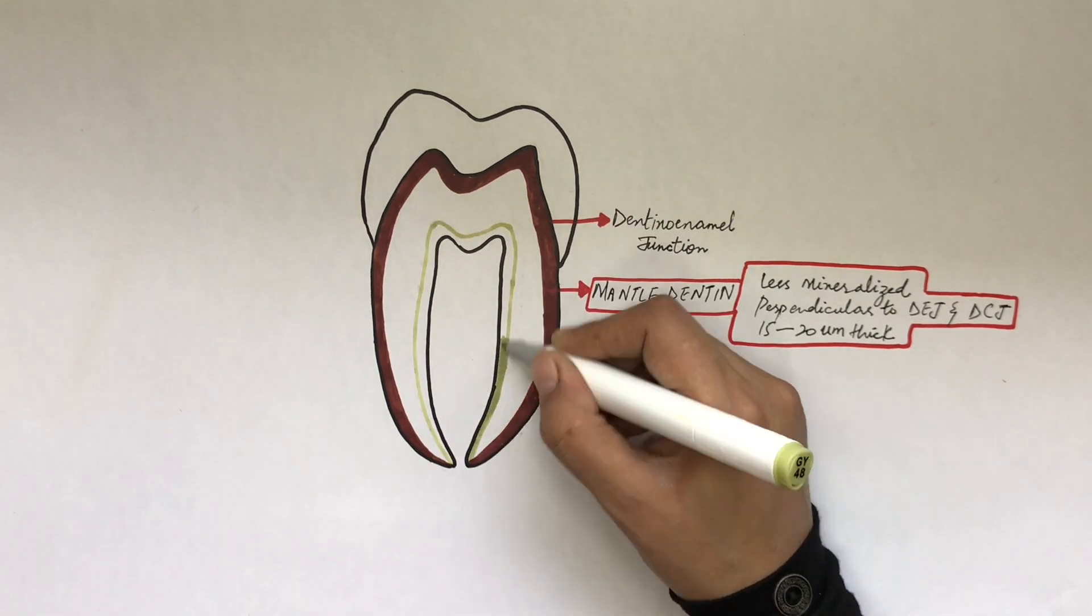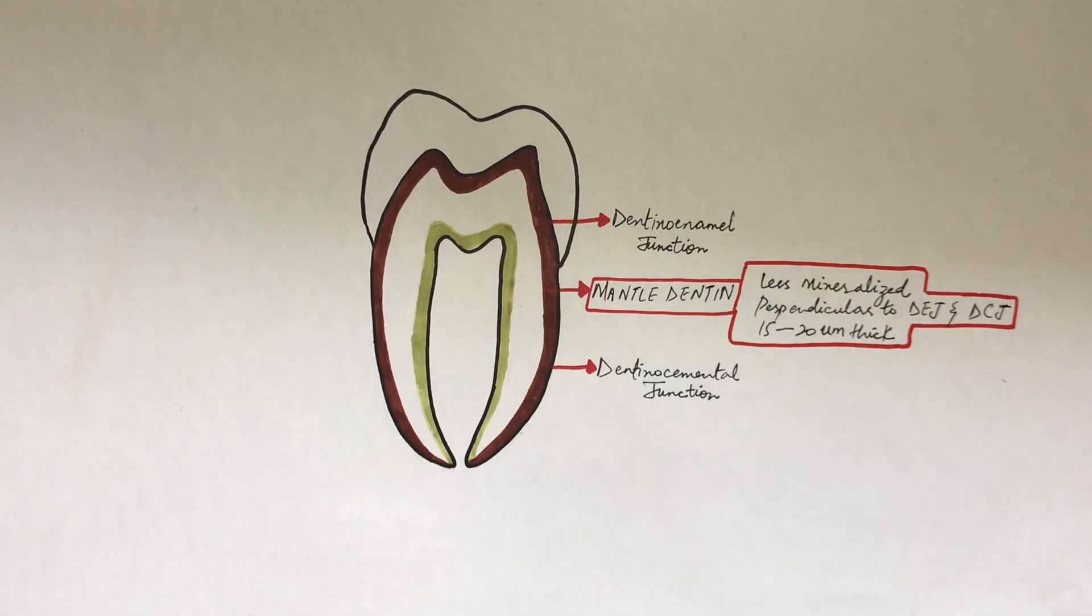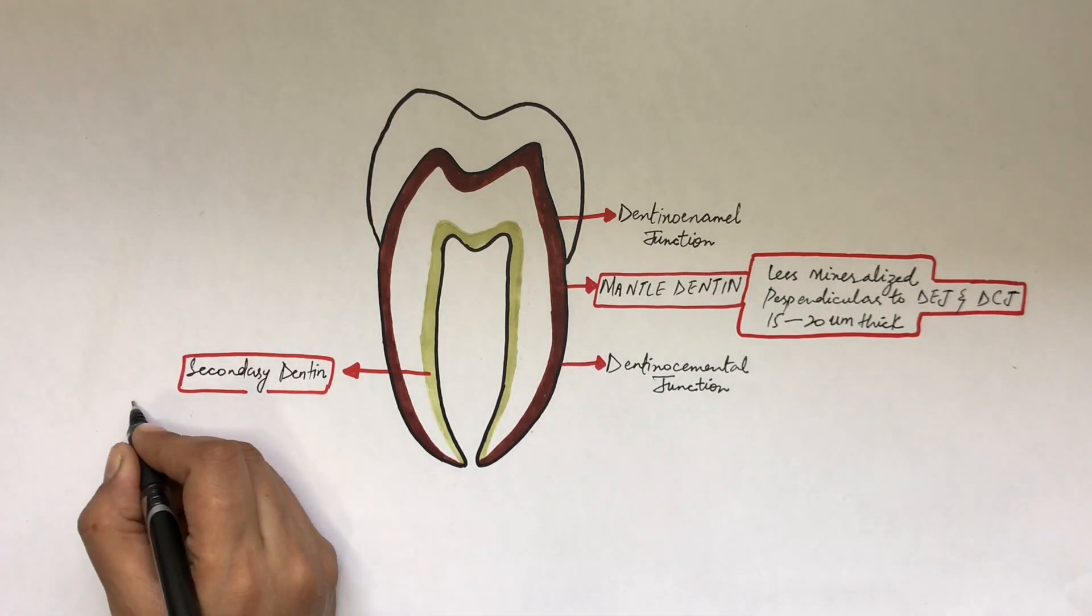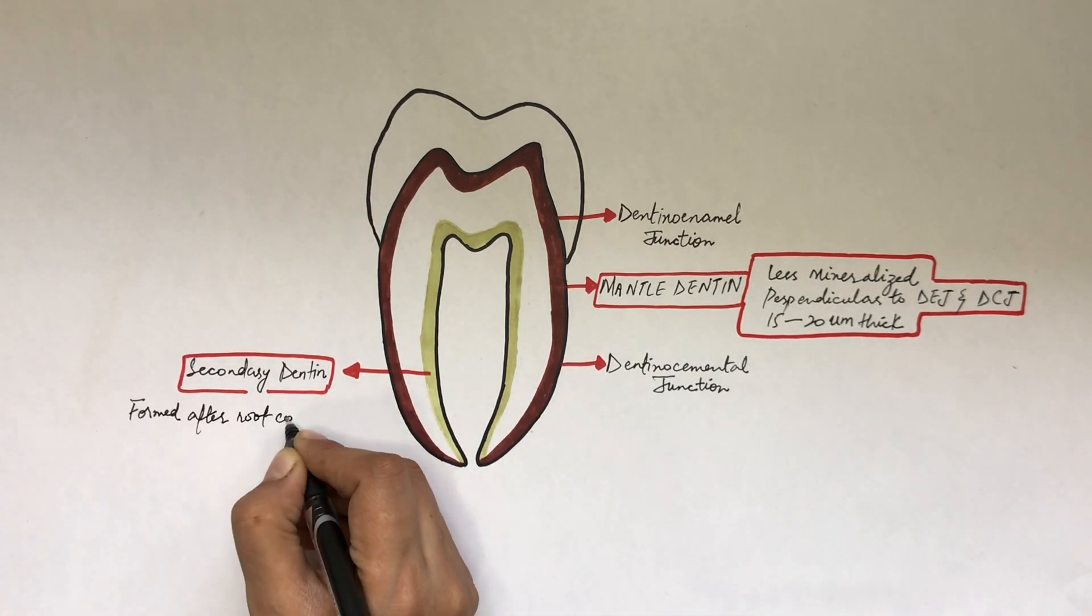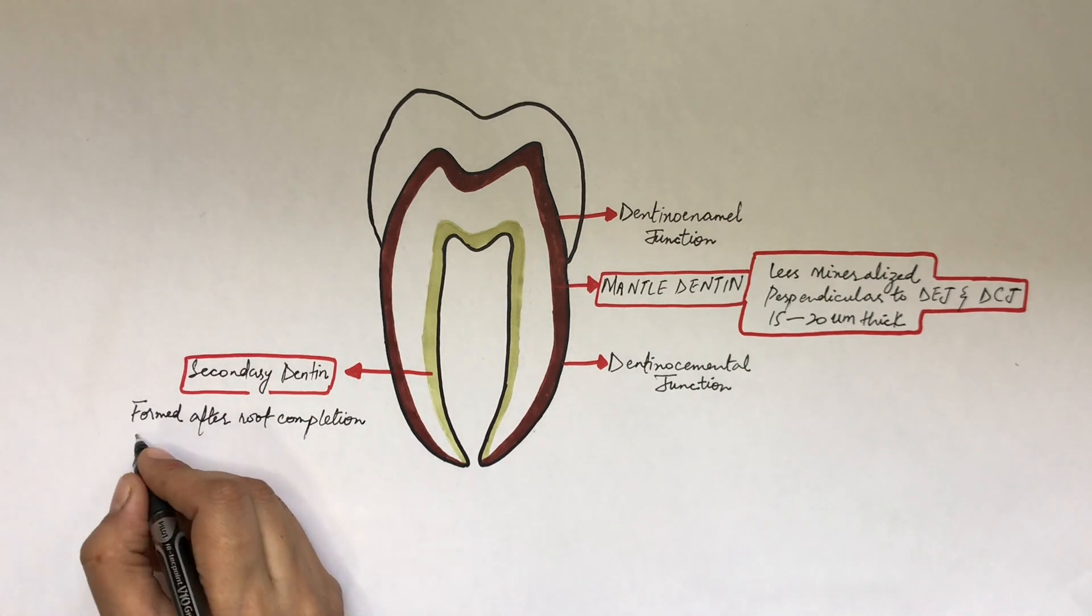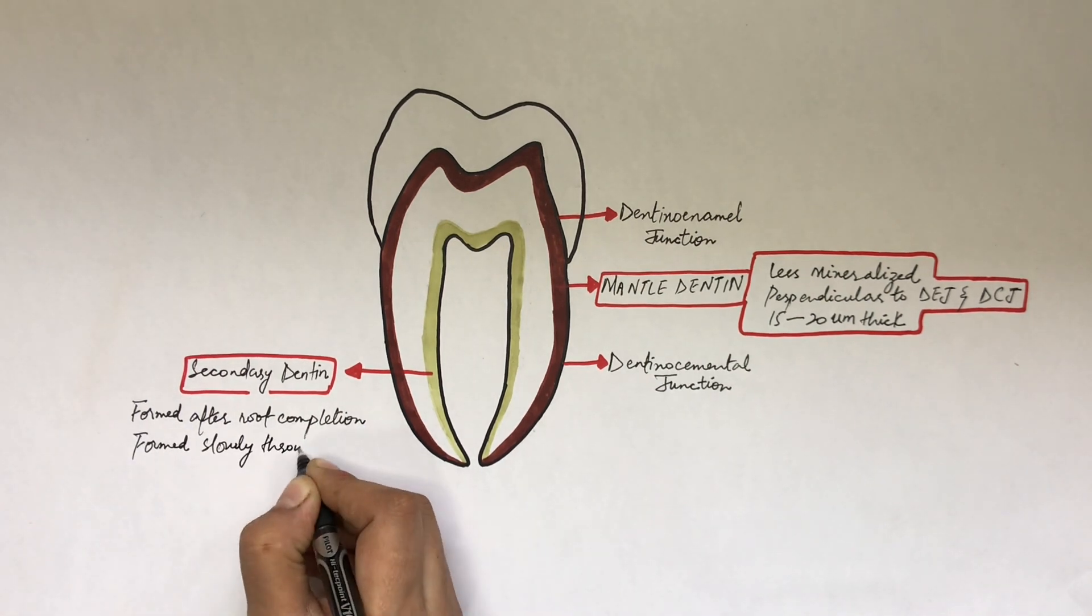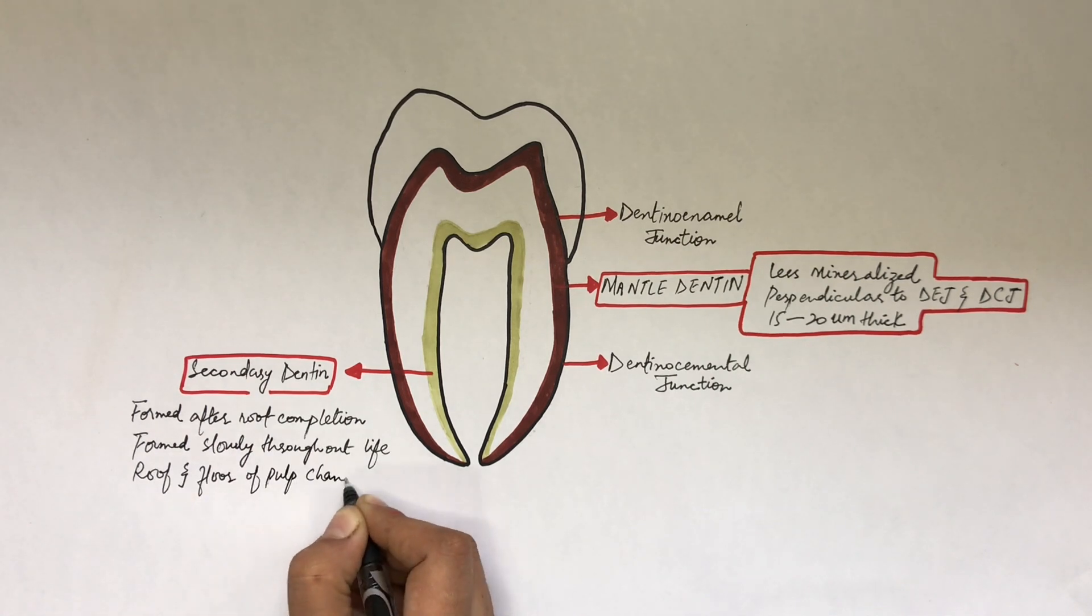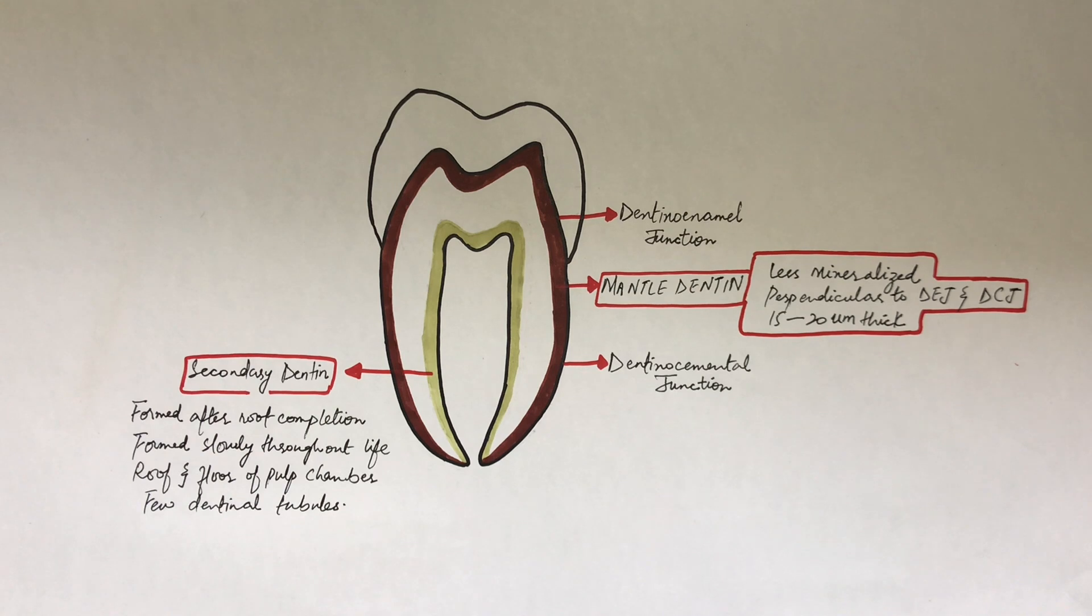The secondary dentine lies close to the pulp chamber. Its formation begins after the root of a tooth is completely formed and is formed slowly throughout life, with its greatest content located at the roof and floor of the pulp chamber. It has fewer dentinal tubules when compared to other areas of the dentine.